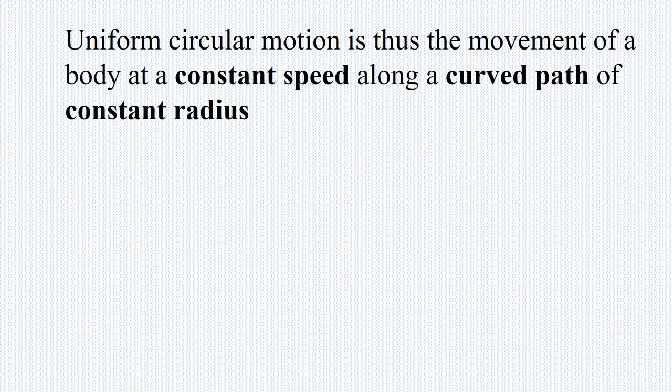Uniform circular motion is thus the movement of a body at a constant speed along a curved path of constant radius.